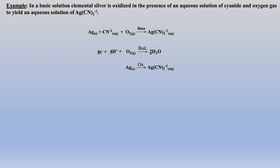Now we will repeat these steps for the oxidation half-reaction. Silver, which is oxidized, is already balanced. We can balance the other atoms by adding 2 cyanides to the reactants side. There are no oxygen atoms, so we don't need to add any water or protons. Now we calculate the overall charge on both sides. If we add an electron to the product side, the charges will be balanced. We then need to multiply the half-reactions so the electrons will cancel, distributing first to the oxidation reaction.